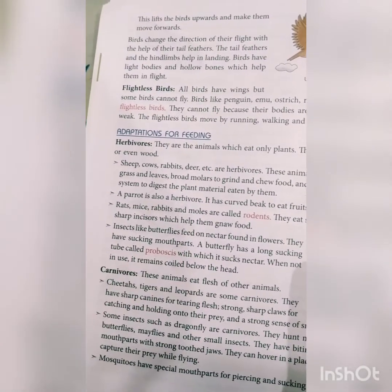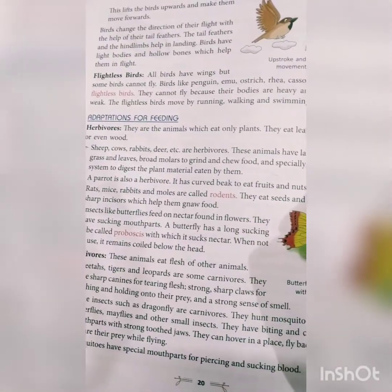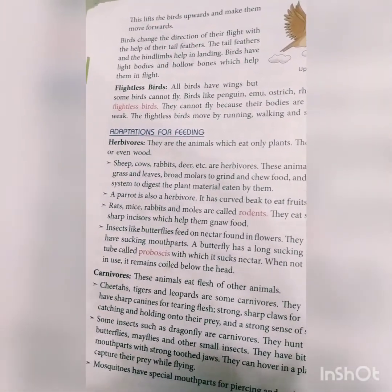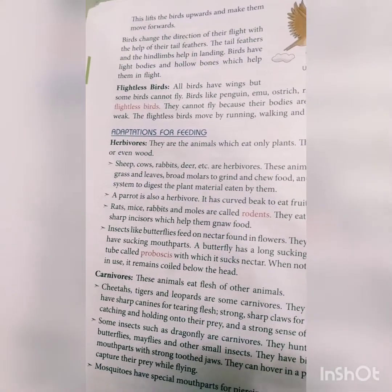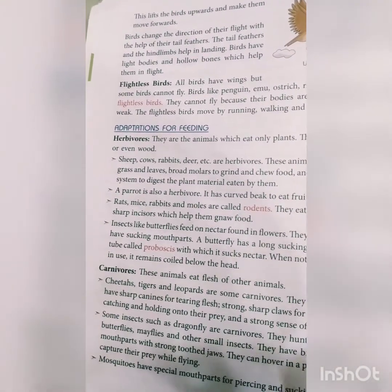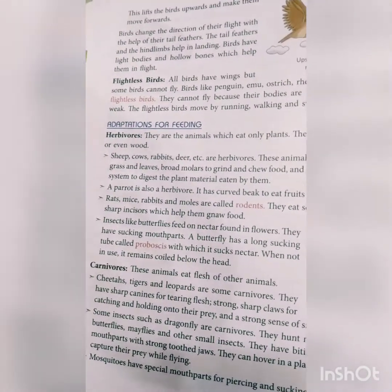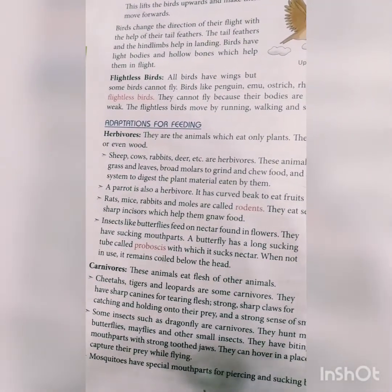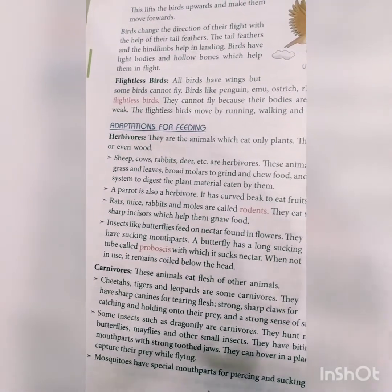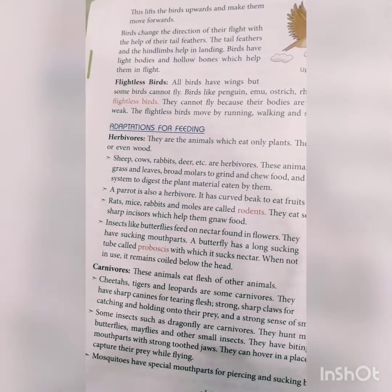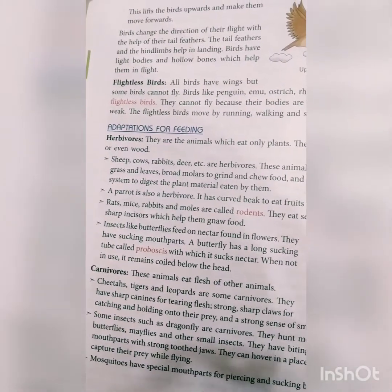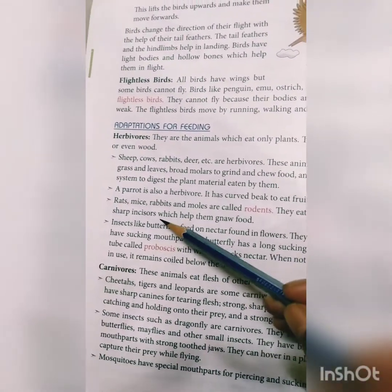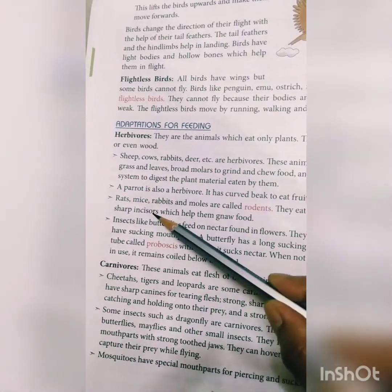A parrot is also a herbivore. It has a curved beak to eat fruits and nuts — this curved beak helps to break nuts or eat hard fruits. Rats, mice, rabbits, and moles are called rodents. They eat seeds and fruits and have sharp incisors which help them gnaw their food.